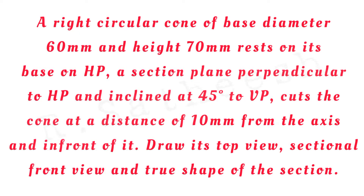Welcome students. In projection of solids, the given problem is: a right circular cone of base diameter 60 mm and height 70 mm rests on its base on HP. A sectional plane perpendicular to HP and inclined 45 degrees to VP cuts the cone at a distance of 10 mm from the axis and in front of it. Draw its top view, sectional front view, and true shape of the section.